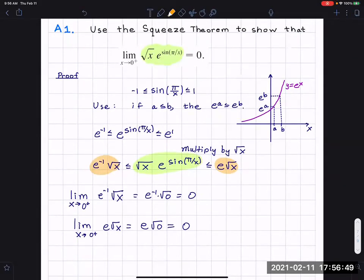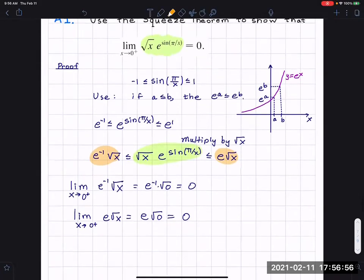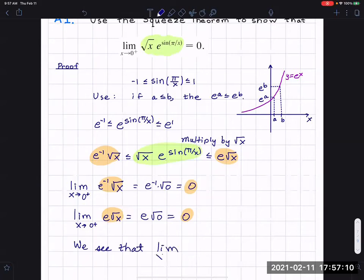But then we show that the outside parts have that limit, and they're both equal to zero. So we see that limit x approaches zero from the right of e to the minus one radical x, that's the first outside function on the far left, is equal to limit x approaches zero e radical x, and they're both equal to zero.